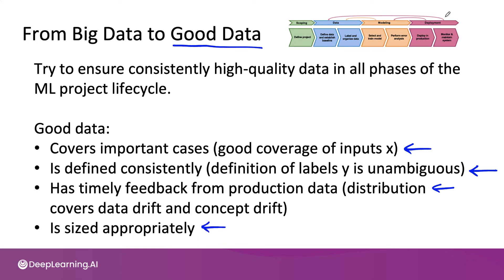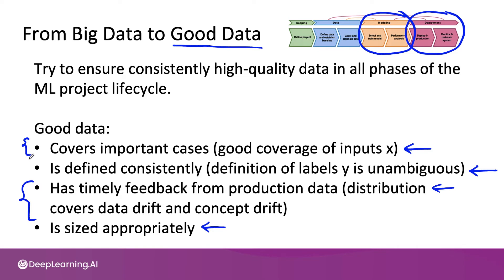So to summarize: during the machine learning project lifecycle, we talked about during the deployment phase last week how to make sure you have timely feedback. This week, as we talked about modeling, we also included in our discussion how to make sure you have good coverage of important cases. Next week, when we dive into data definition, we'll spend much more time talking about how to make sure your data is defined consistently. I hope that with the ideas conveyed last week, this week, and next week, you'll be armed with the tools you need to give your learning algorithm good data through all phases of the machine learning project lifecycle.